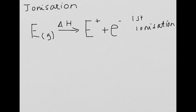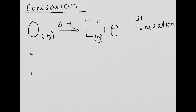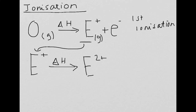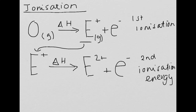The second ionization energy equation changes slightly. You can be asked to write both in the exam. Don't forget: if they give you a specific element, replace E with that element symbol — for example, oxygen would be O(g). For the second ionization energy: E⁺(g) → E²⁺(g) + e⁻, with delta H. It starts from the 1+ ion and loses another electron. Always include the gaseous state symbol or you won't get the mark.